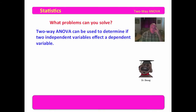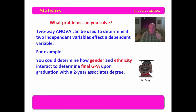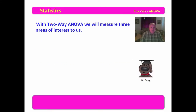What type of problems can you solve? Two-way ANOVA can be used to determine if two independent variables affect a dependent variable. For example, you could determine how gender and ethnicity interact to determine final GPA upon graduation with a two-year associate's degree. Notice that gender and ethnicity are both categorical, and your final GPA is continuous, ranging in most institutions somewhere between 0 and 4. I have seen some institutions with a GPA ranging from 0 to 5 — I don't know why they would do that, probably just to drive the rest of us insane.